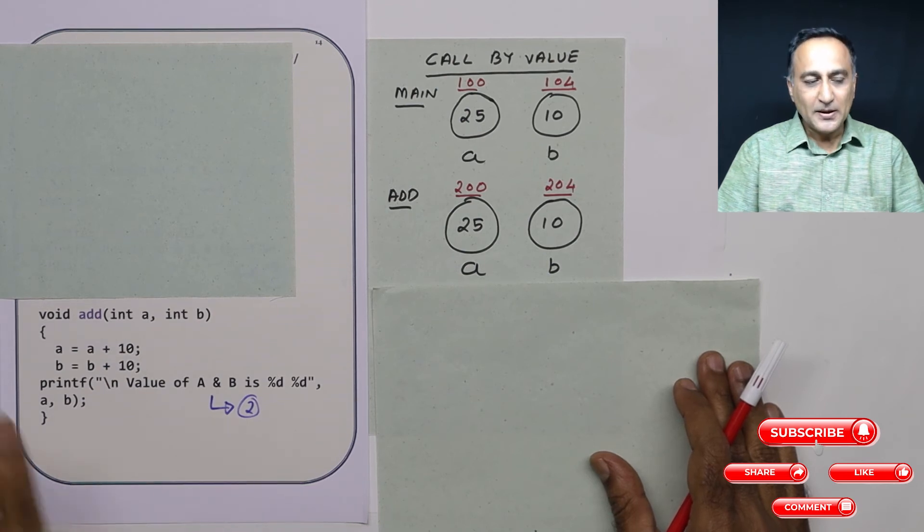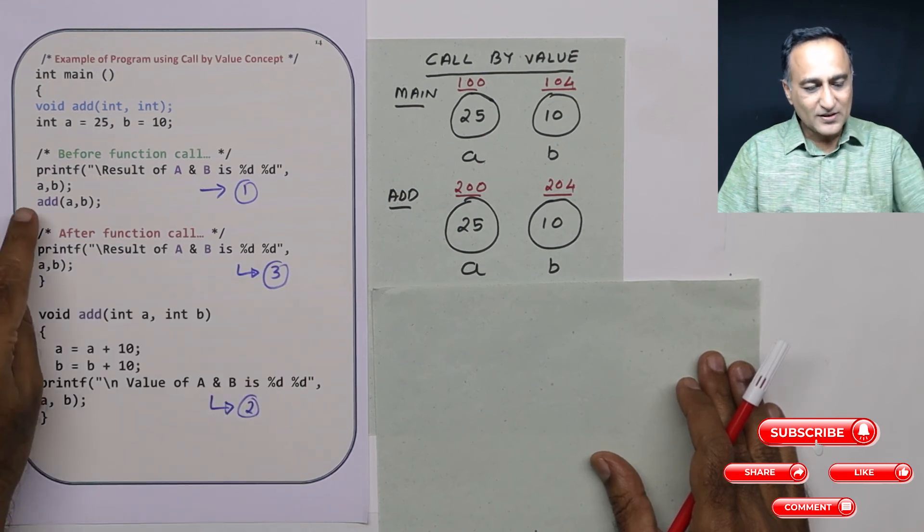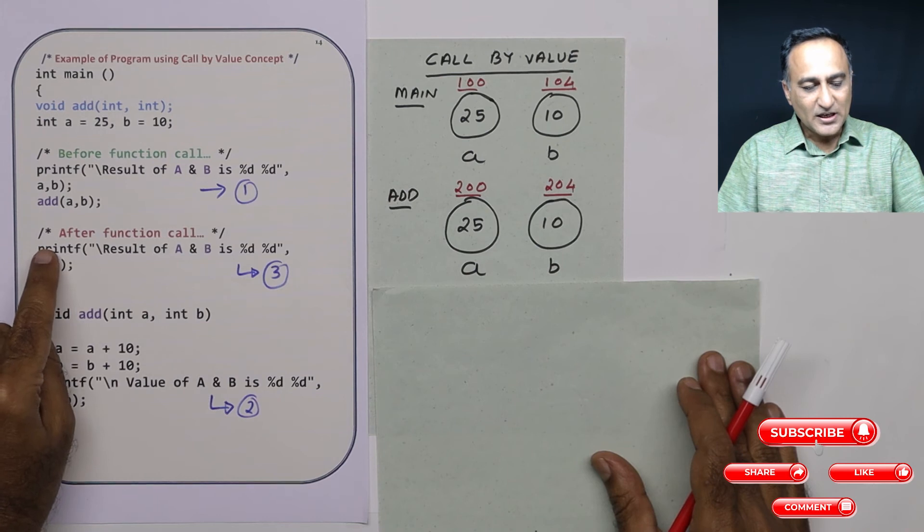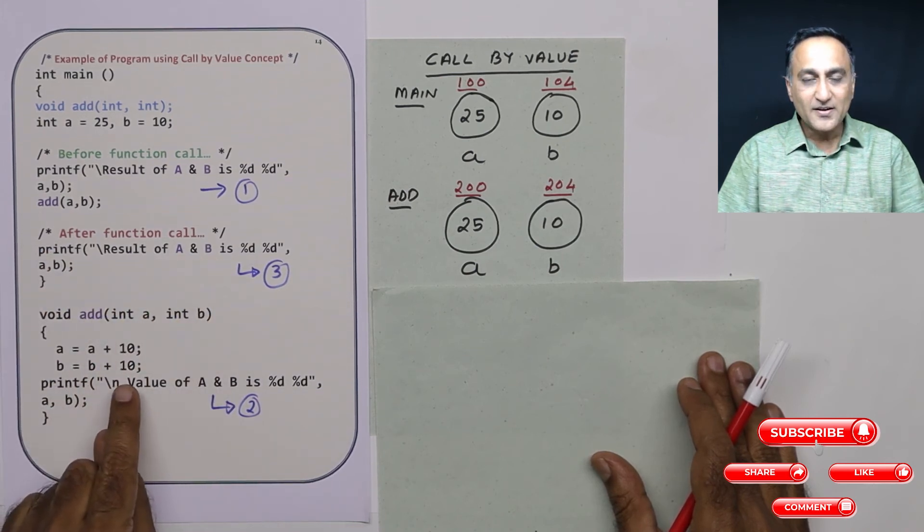But now if I go back to here, if I come back here after this add(a, b), now when I print a and b, it is not going to print 35 and 20.